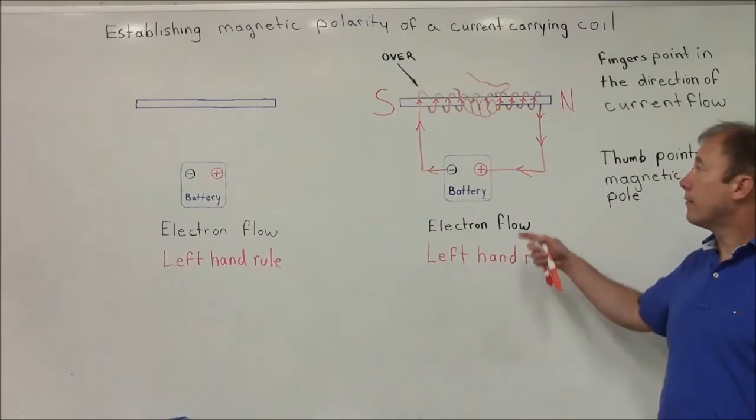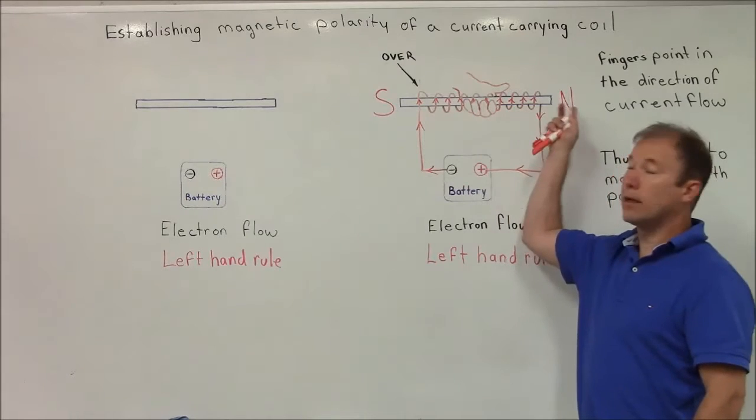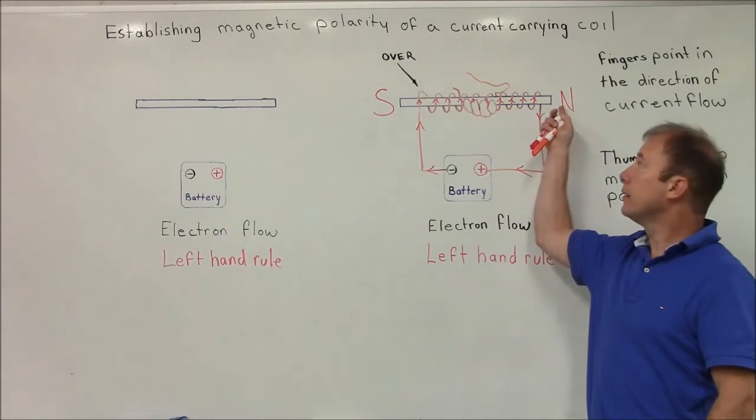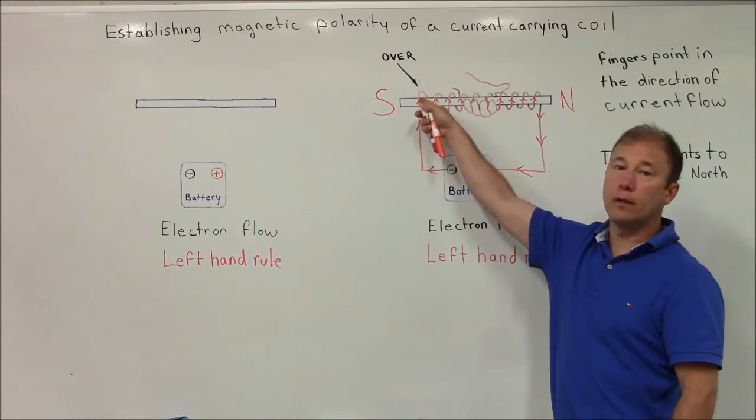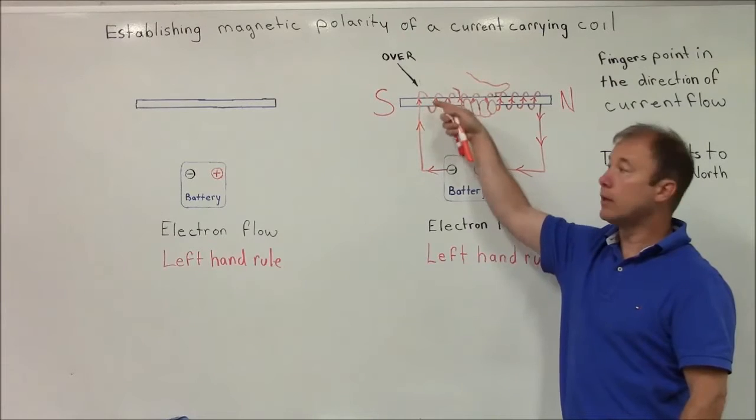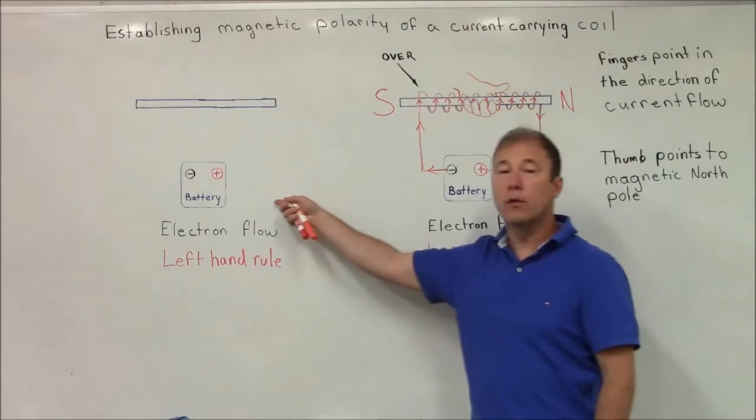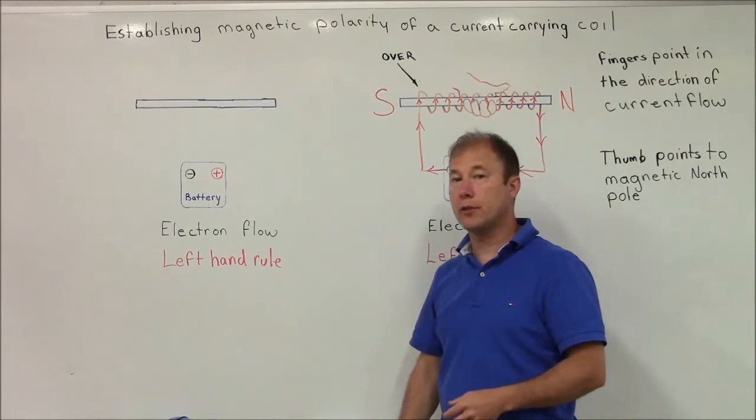All right, here we have one coil, and notice the direction of polarity, north and south, and we went over with our coil. So we started the wrap using over. Over here, we want to use under, and we'll see what happens to the direction of polarity.